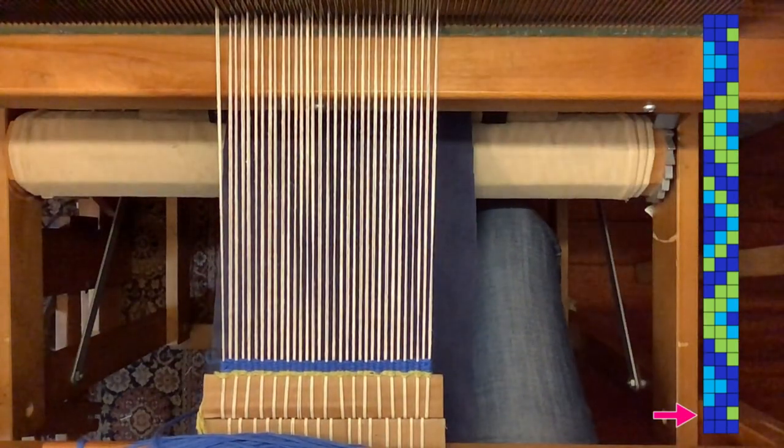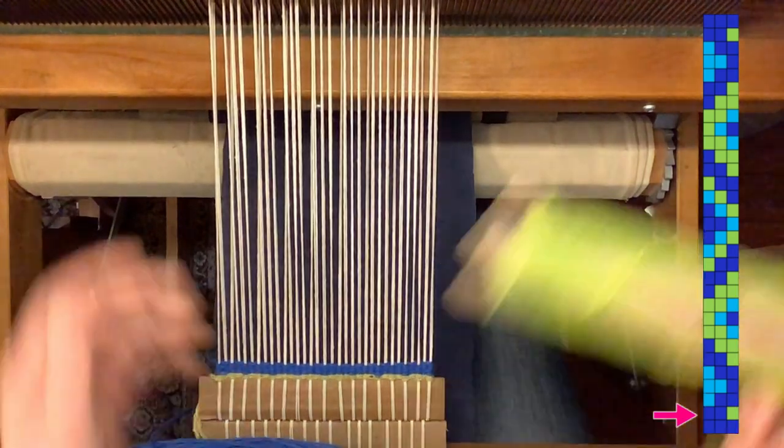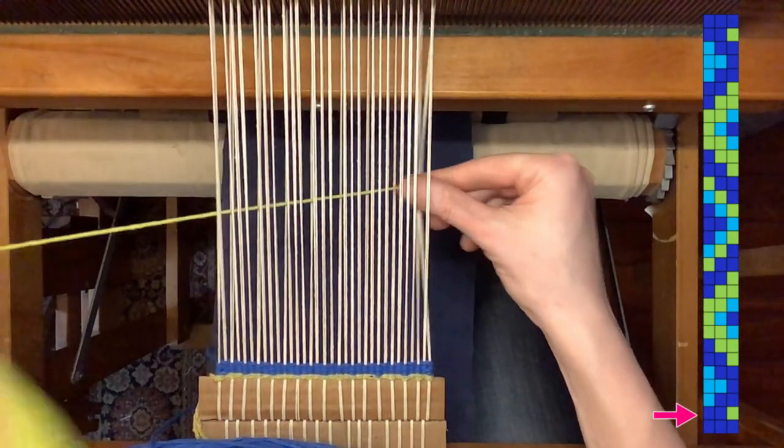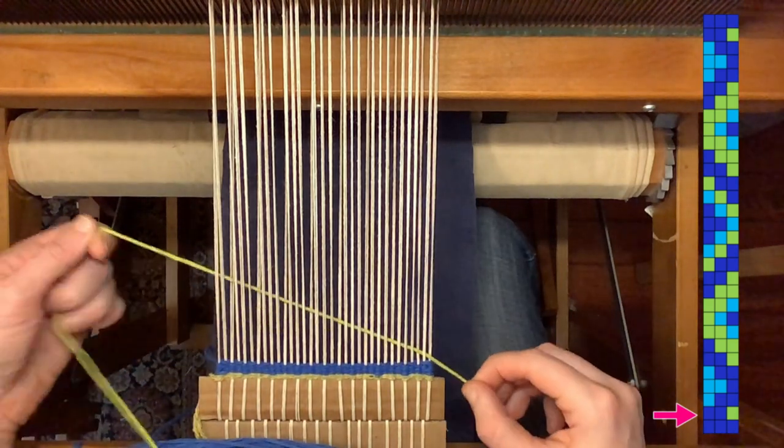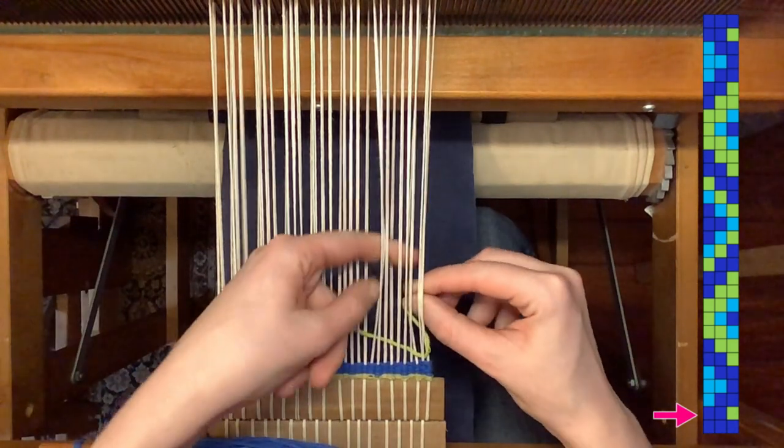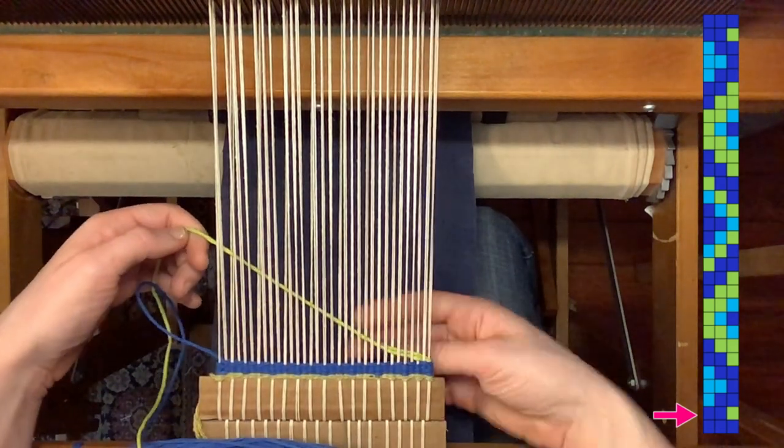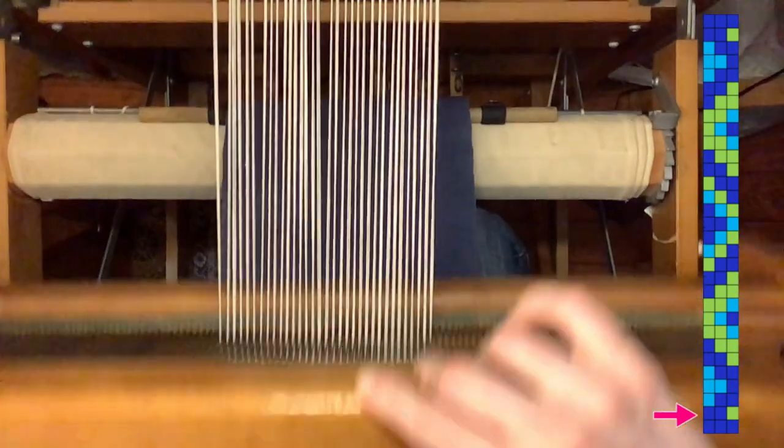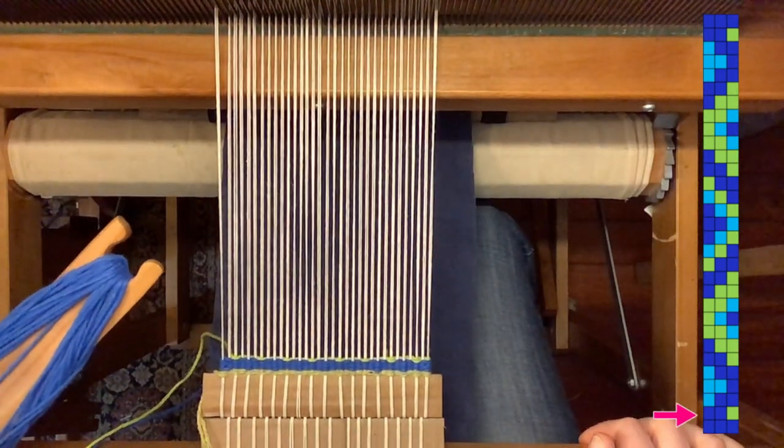And then I'll add my green for the third shed or third pick. I usually start my colors out all on the right side just out of pure habit, but it doesn't really matter because they will get mixed up as you weave along and place them in different sheds. Okay, now I'll repeat this new sequence two more times.